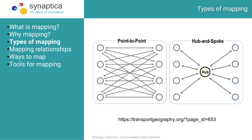Point-to-point mapping — every vocabulary maps to every other vocabulary — provides direct mappings for everything but is messy and complicated, like the diagram on the left. If you have a network of train stations and every station maps to every other station, you're left with something very detailed that lets you get from point to point, but it's a big mess that requires lots and lots of lines.